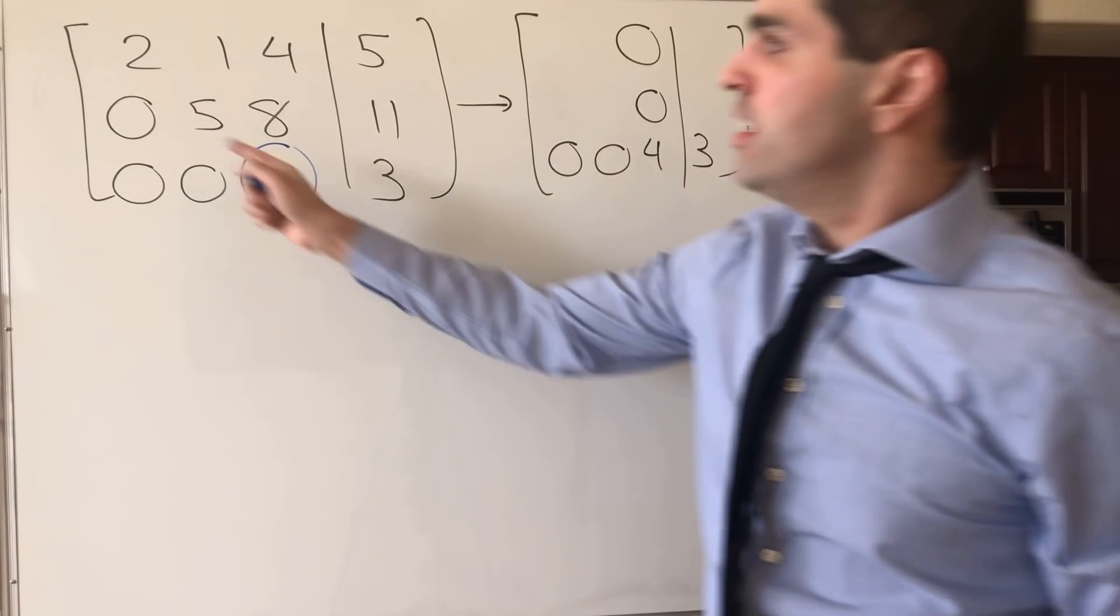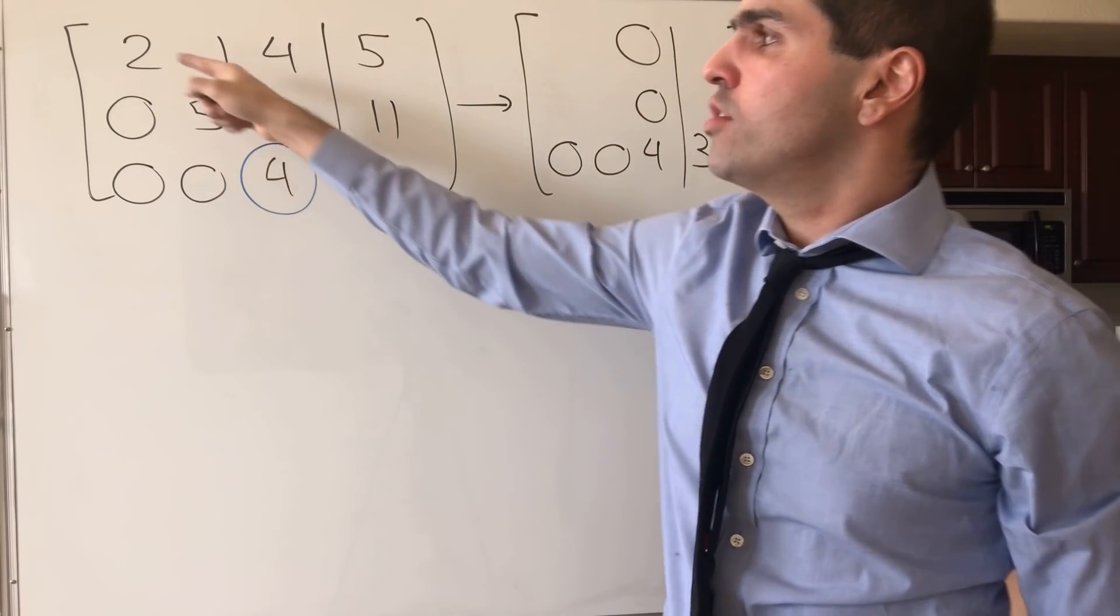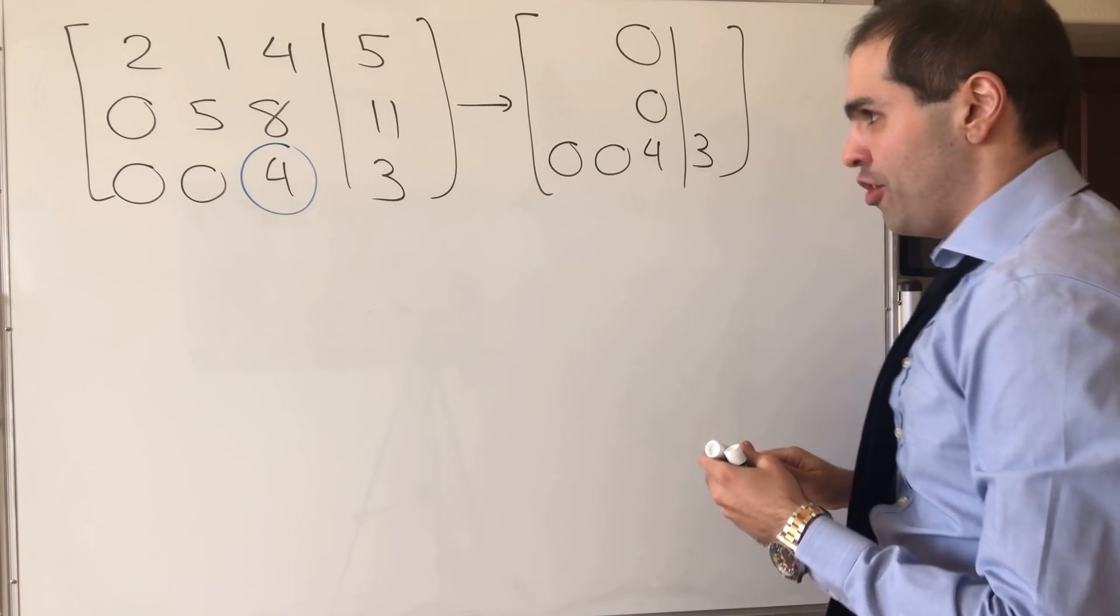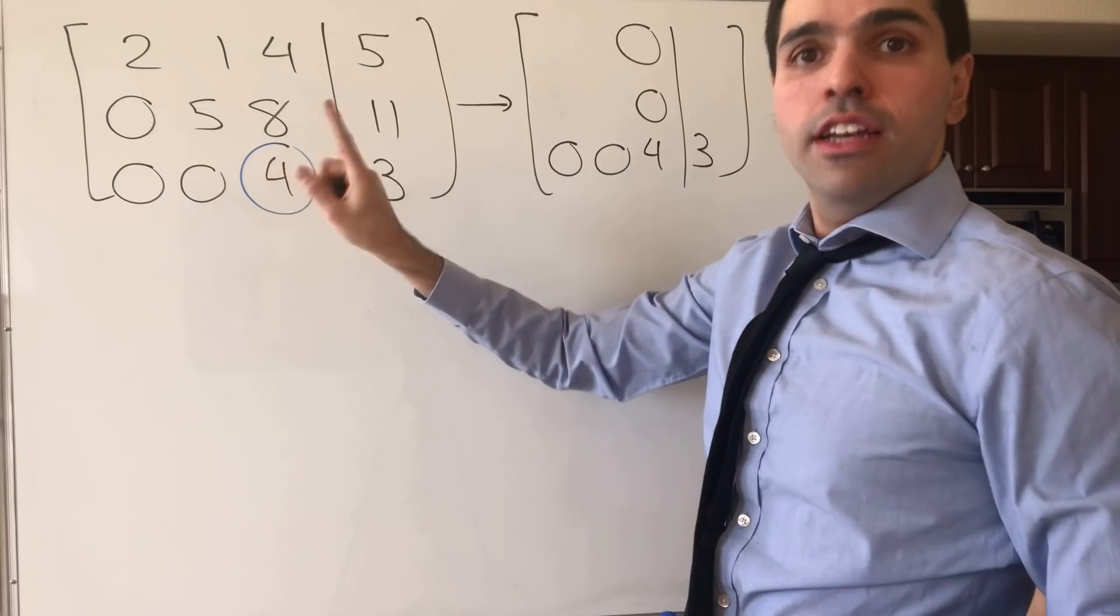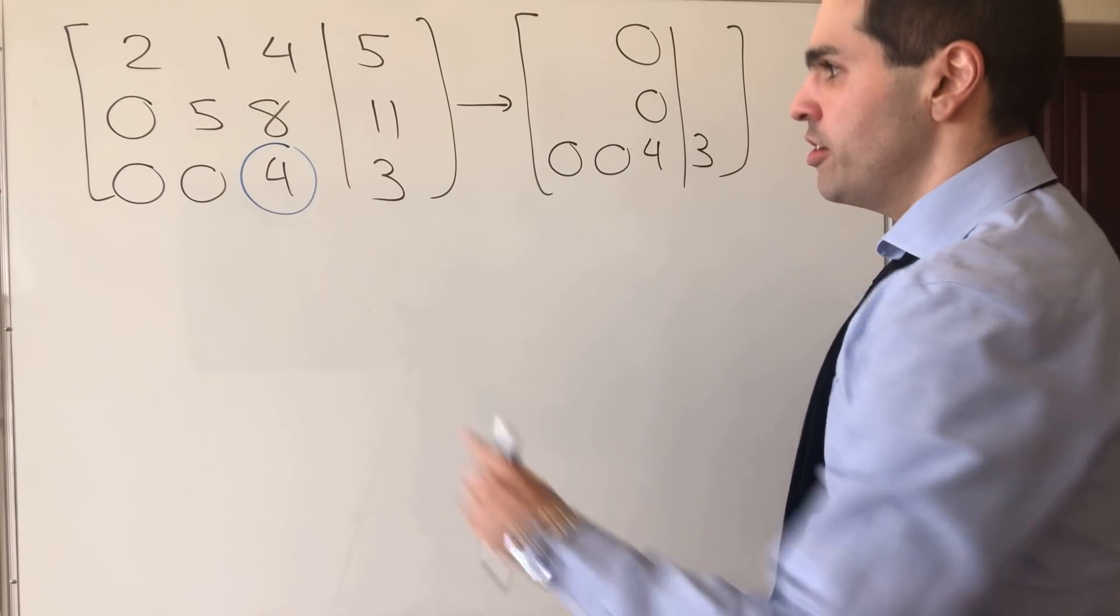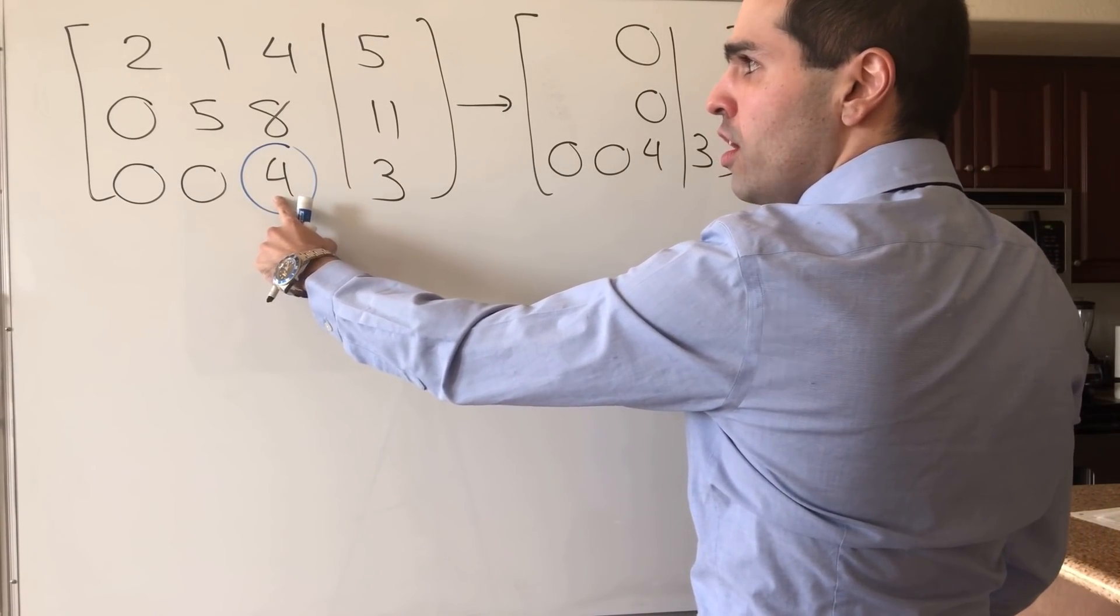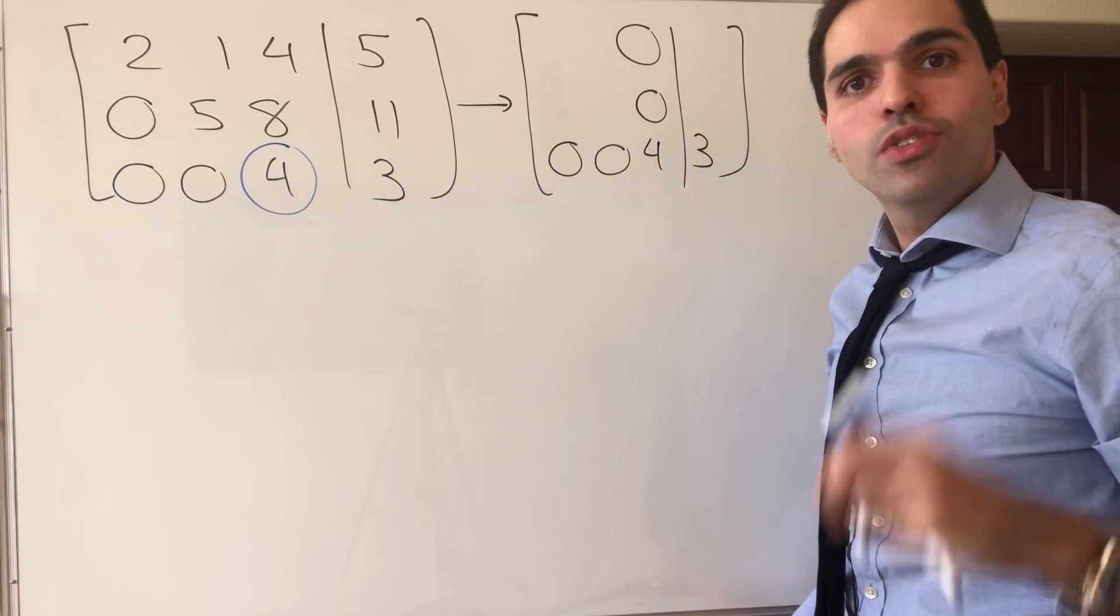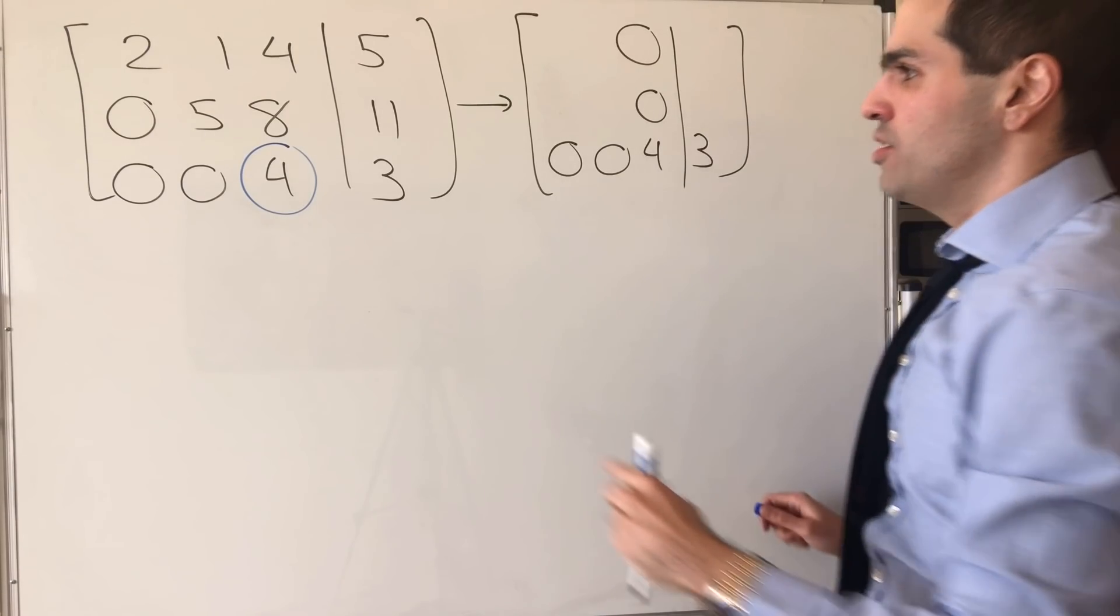And the question is, what happens to the entries to the left of 4, and what happens to the entries to the right of 4? Well, to the left is actually surprisingly easier. So you take this 4 and multiply all the entries by minus 4.